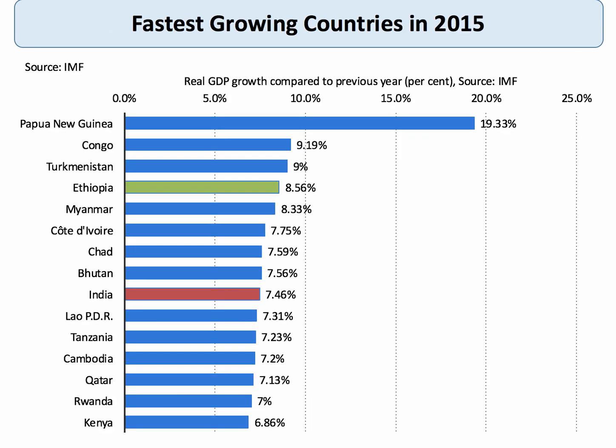Of course, other countries grow much more quickly. That's partly because of the stage of their economic development. But take a look at this chart, which shows the IMF's forecast for the fastest growing economies in the world in 2015. There are some pretty staggering growth rates there, in excess of 7% per year. China would have been in this chart in 2014, but as you know, China at the moment is experiencing a relative economic slowdown.